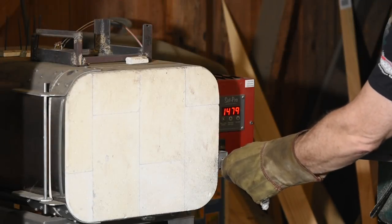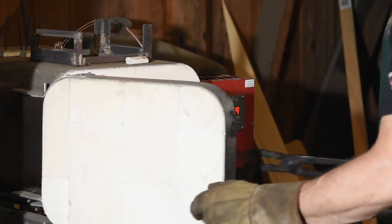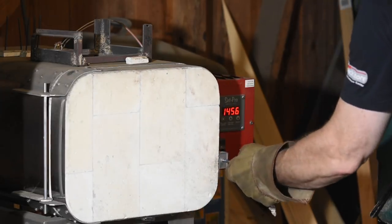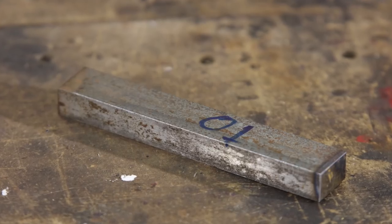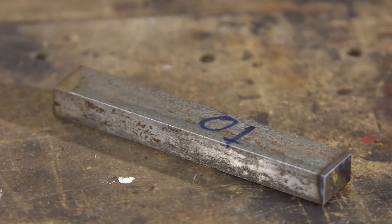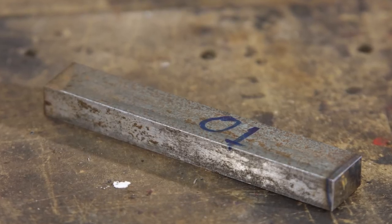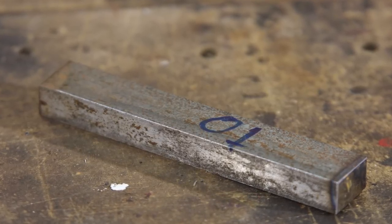Next, we'll move on to the optional part of this project, heat treating. If you make the guide, as I did, from O1 or some other hardenable steel, now's the time. If, on the other hand, you made it from mild steel, which is not capable of being hardened, then the project's pretty well finished for you.